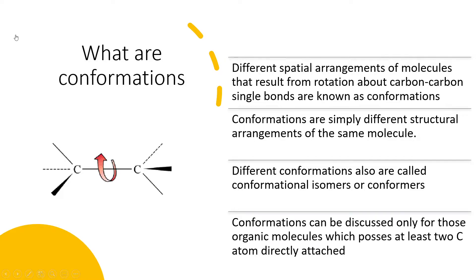Confirmations are simply different structural arrangements of the same molecule that result from rotation about a carbon-carbon single bond. These confirmations are also called conformational or rotational isomers, or conformers. Remember, confirmations can be discussed only for those organic molecules which possess at least 2 carbon atoms directly attached — meaning at least 1 carbon-carbon single bond.